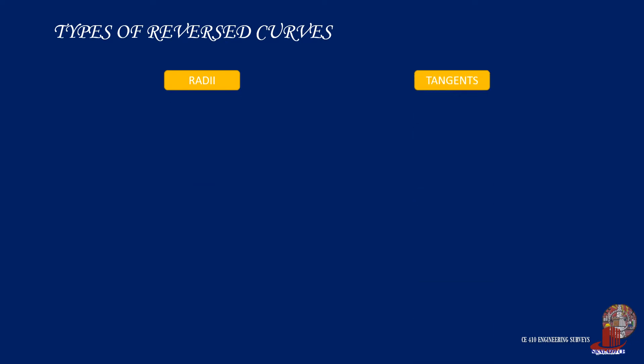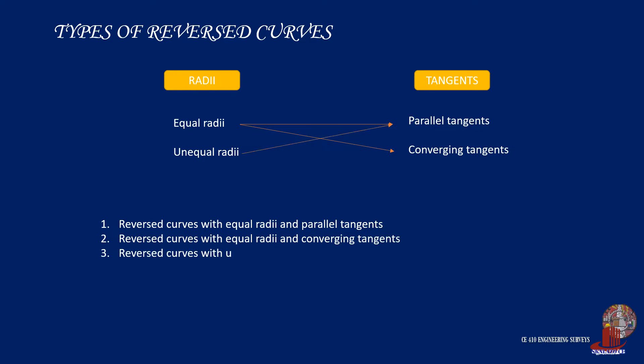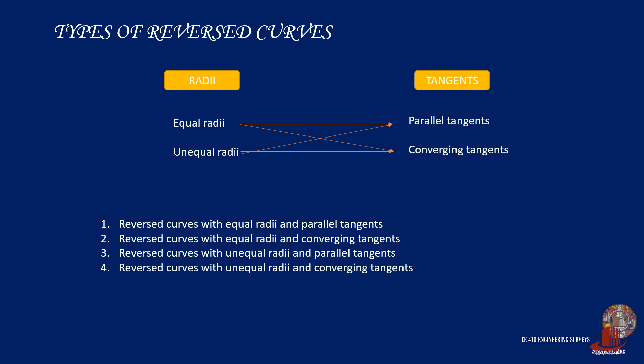There are four types of reverse curves categorized by their radii and tangents. The radii can be classified as equal or unequal, whereas the tangents are grouped as parallel or converging. The four types are: reverse curves with equal radii and parallel tangents; reverse curves with equal radii and converging tangents; reverse curves with unequal radii and parallel tangents; and reverse curves with unequal radii and converging tangents.